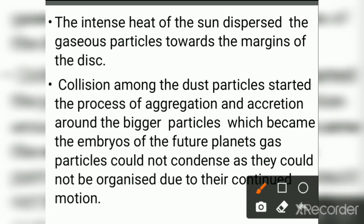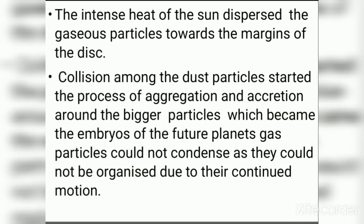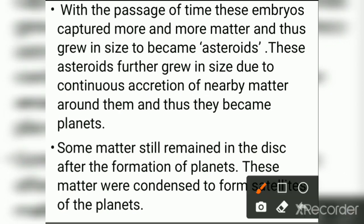The intense heat of the Sun dispersed gas particles towards the margin of the disk. Collisions among the dust particles started the process of aggregation and accretion around bigger particles, which became the embryos of future planets. Gas particles could not condense as they could not organize due to their continued motion. With the passage of time, these embryos captured more and more matter and grew in size to become asteroids, which further grew into planets. The remaining matter in the disk condensed to form satellites.